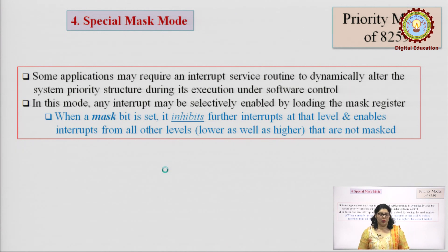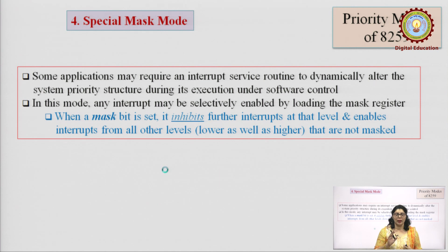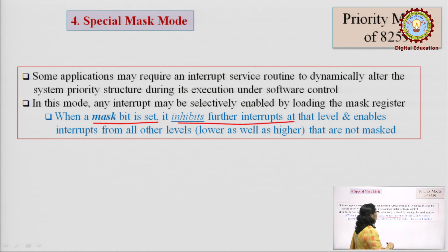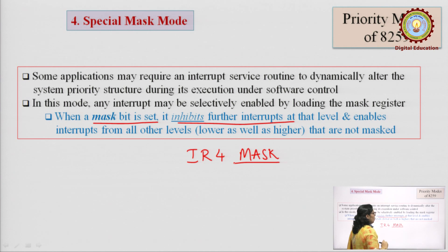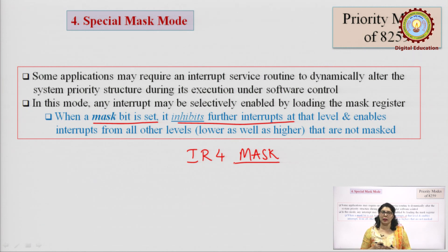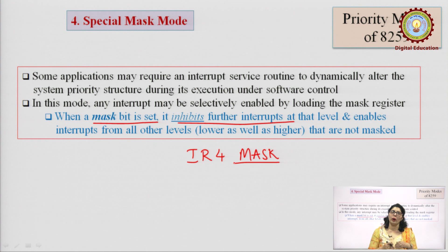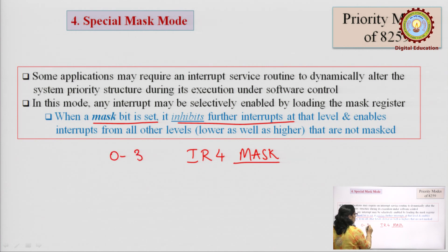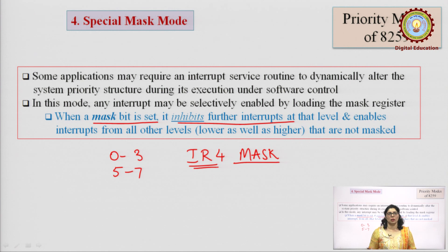Special mask mode allows dynamic priority changes. When a mask bit is set, it inhibits further interrupts from that pin. For example, if IR4 is masked (disabled), IR4 will not generate any interrupt — any request placed by IR4 will not be accepted. However, any interrupt of higher or lower priority can still be generated. So interrupt generation can happen from IR0 to IR3 and from IR5 to IR7, but IR4 will not be serviced as long as masking remains — meaning it stays disabled.